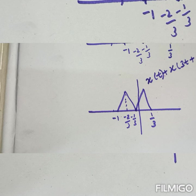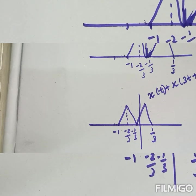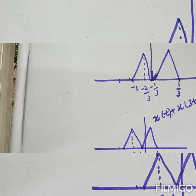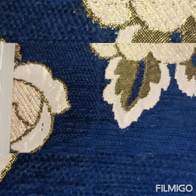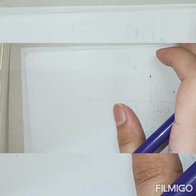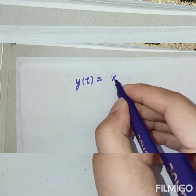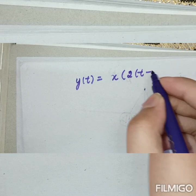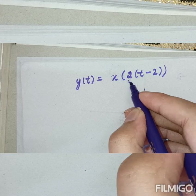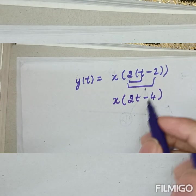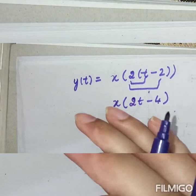Now we have another question — question number 3. He has given the same continuous signal and asked us to do the operation: y of t equals x of 2 into (t minus 2). Multiplying 2 into t and 2 into 2, we get y of t equals x of 2t minus 4. This involves two operations: shifting and scaling.